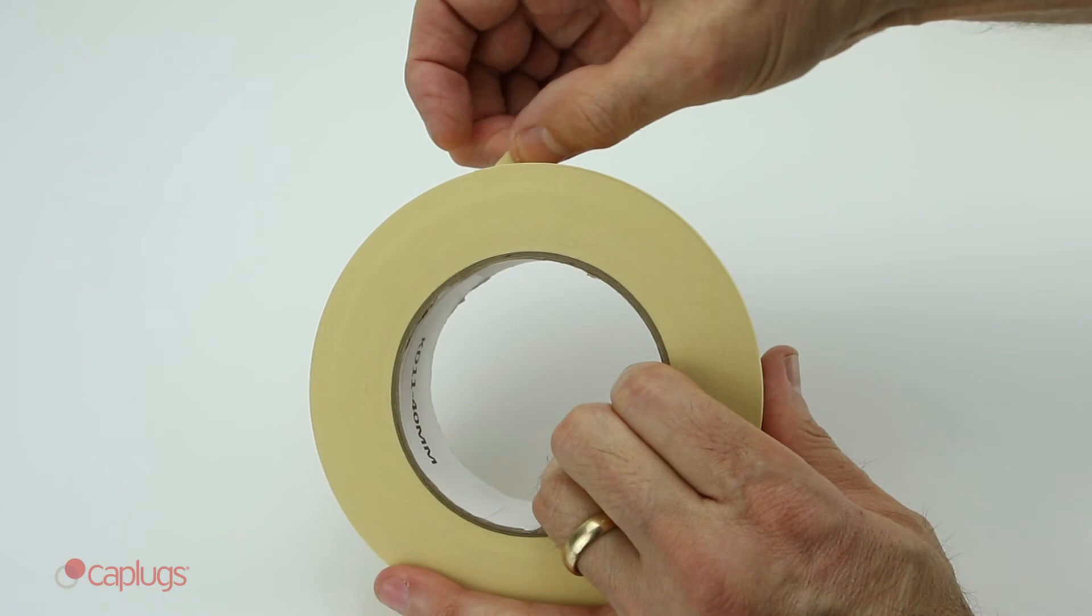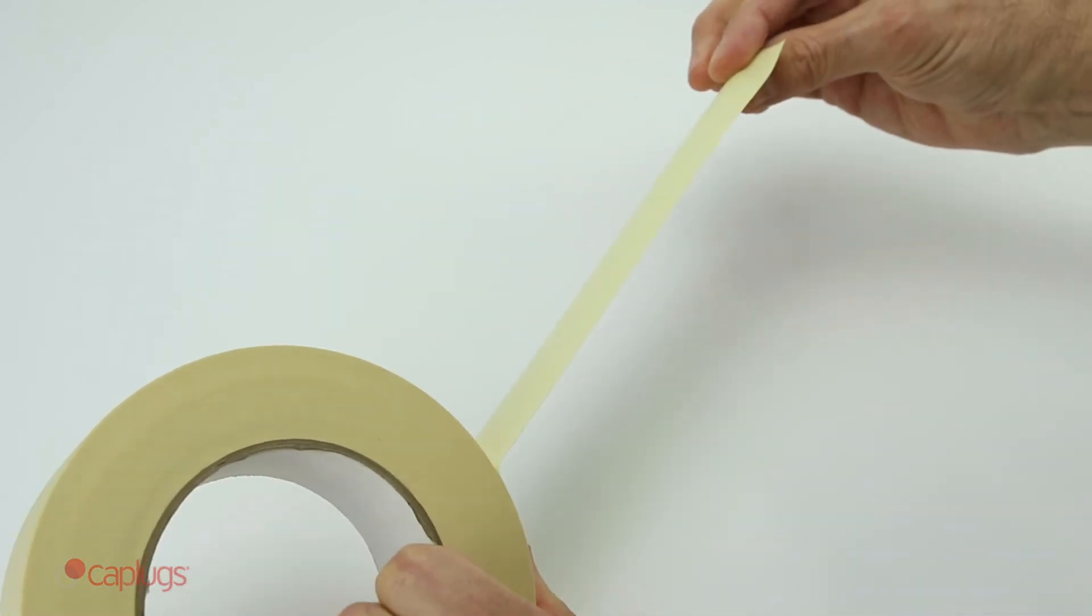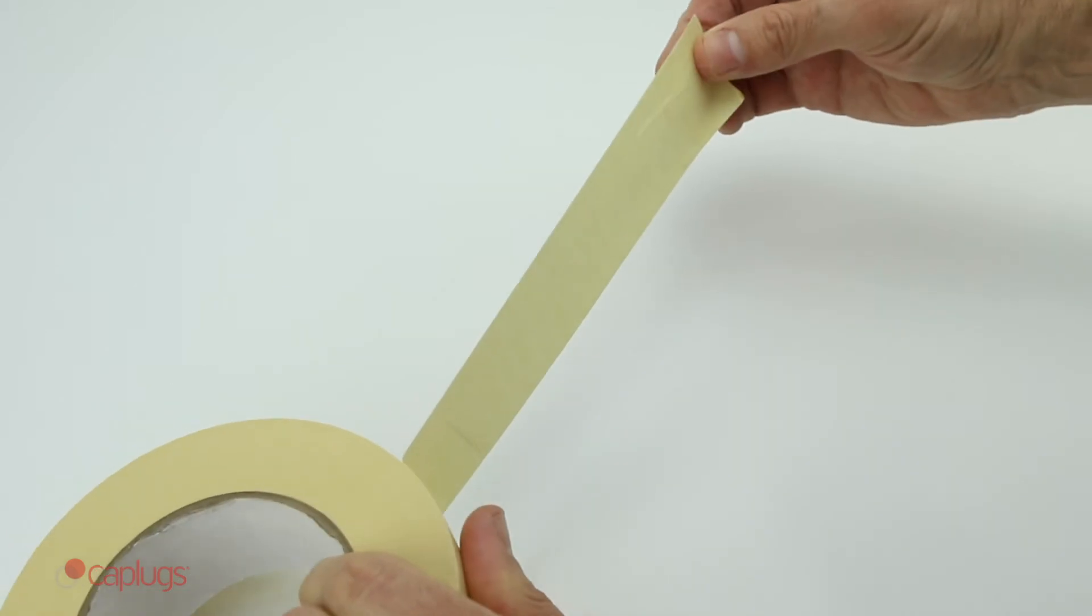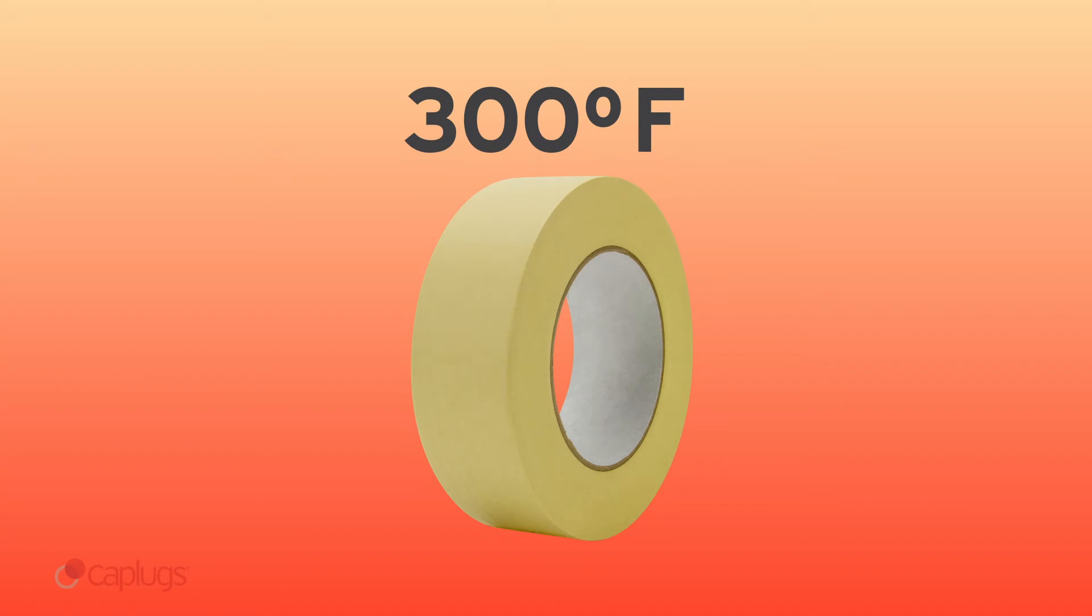KD11-SH is made of a fine-structured, smooth crepe backing. The tape is strong and works well on curved surfaces. KD11-SH can withstand temperatures up to 300 degrees Fahrenheit.